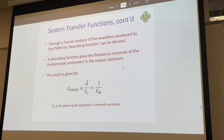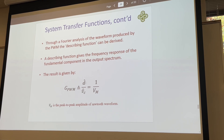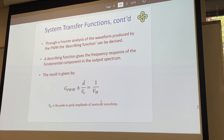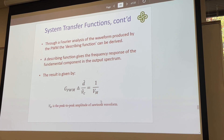The peak-to-peak amplitude of the sawtooth wave is described as V sub M. Using a Fourier analysis of the waveform produced by the pulse width modulator, the describing function is derived. The result gives us the frequency response of the fundamental component of the output spectrum, giving a gain of 1 over VM. For example, with a 5-volt peak-to-peak pulse width modulator, the transfer function would be 1 over 5.